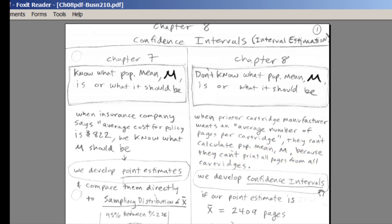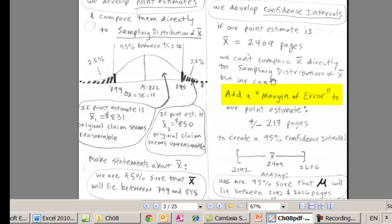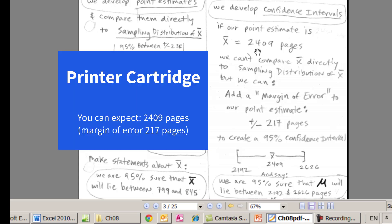So that's where confidence intervals come in. So we're still going to use point estimates. We'll go out and take a sample. We'll get 2,409 pages. That's the average from our sample, or the mean from our sample of number of pages. But we can't use this, or we can't compare it directly to the sampling distribution of X bar. So what do we do? We're going to add a margin of error to our point estimate. And we'll do this example a couple of videos ahead. We'll get a margin of error of 217 pages. So we'll create a 95% confidence interval that says we're 95% sure that the population mean lies between 2,190 and 2,620. So you might even see in the ad or on the back of the book or the manual that comes with the printer cartridge, it would say something like 2,400 pages with a margin of error of 200 pages.